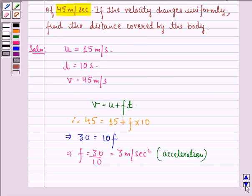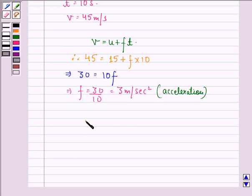Now, from another equation of motion, we know that v² - u² = 2fs. This implies 45² - 15² = 2 × 3 × s. We have to find the value of s, which is the distance covered by the body.